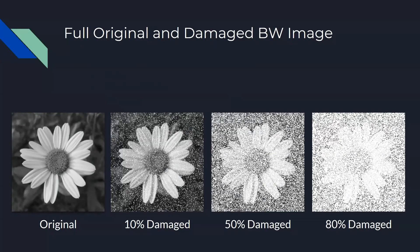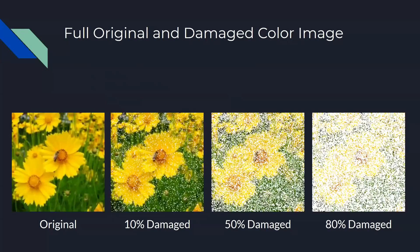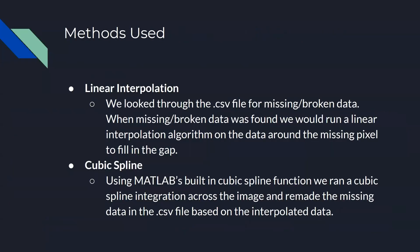These pixels are randomly selected and changed to pure white. We also have the color image through 10 percent damage, 50 percent damage, and 80 percent damage. The methods we use to reconstruct the image files, which we'll show in the next couple slides, are linear interpolation and cubic spline.